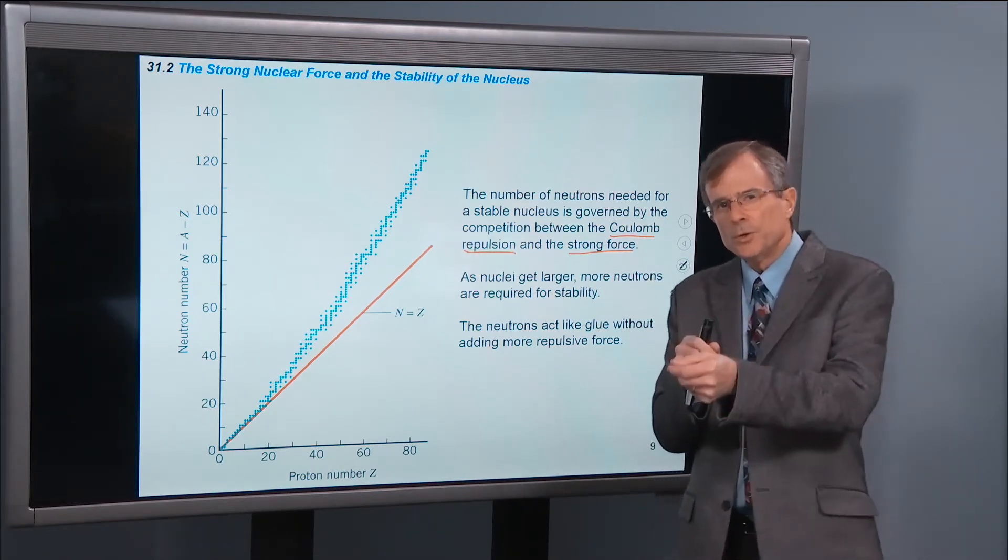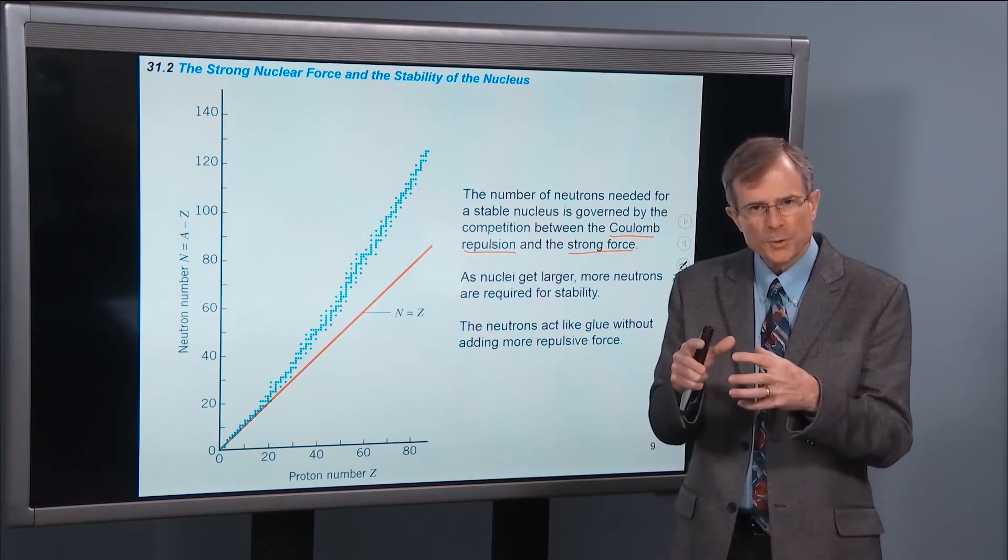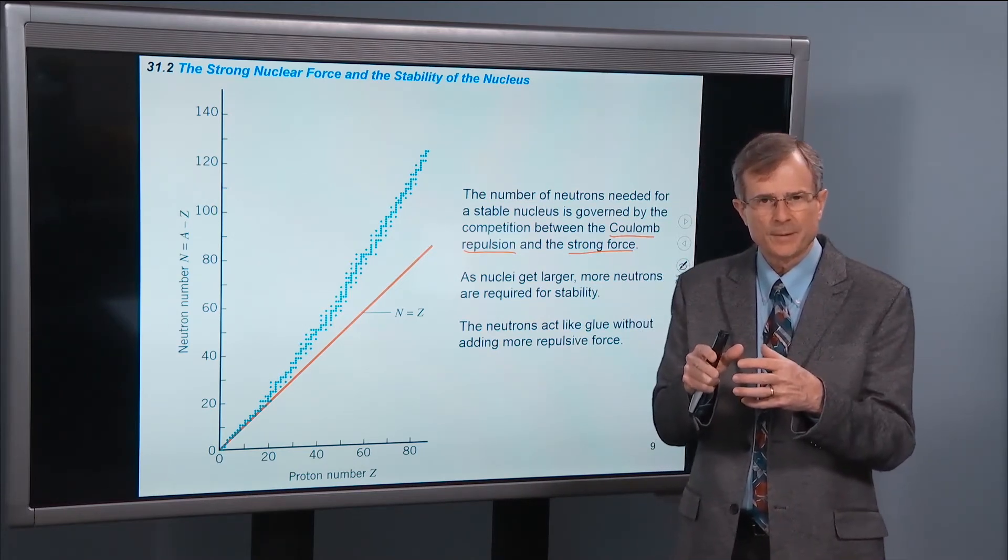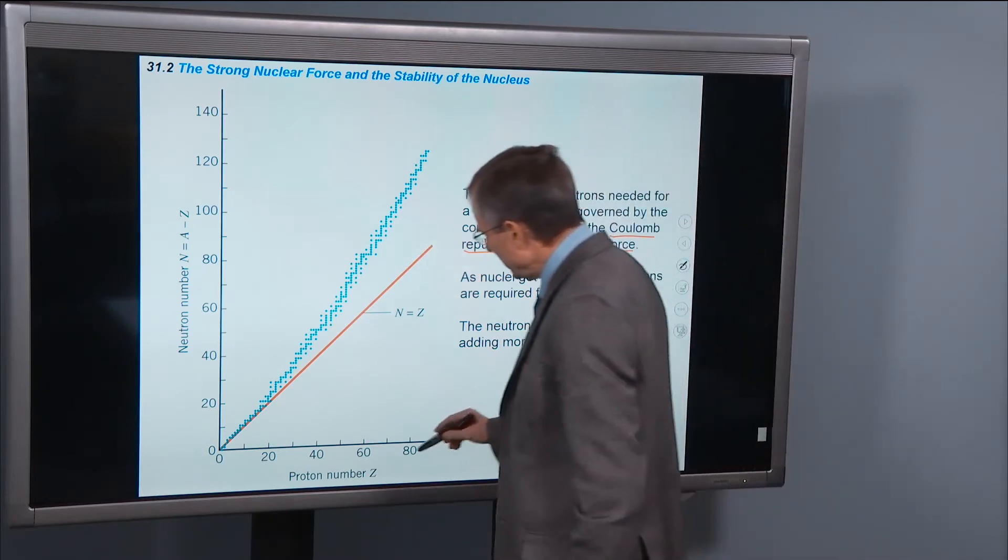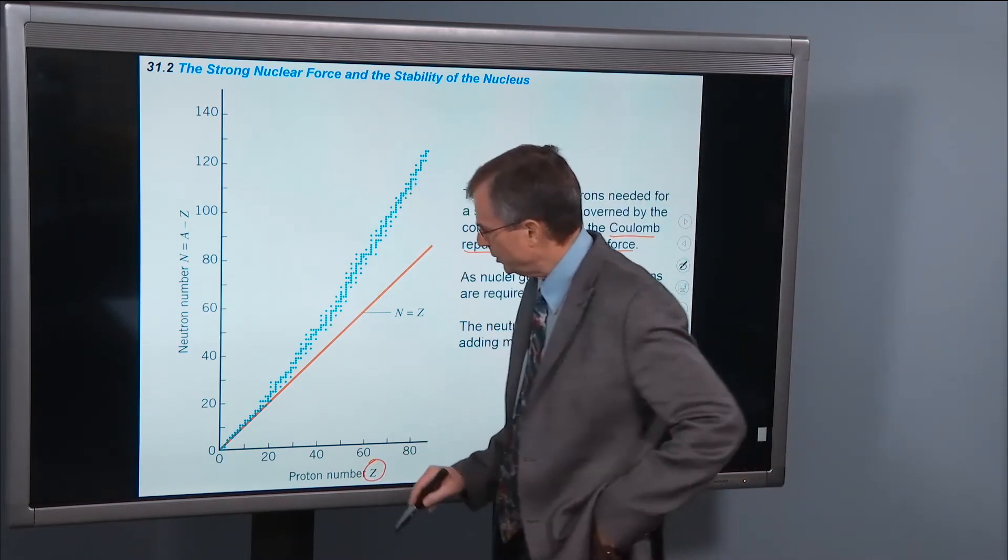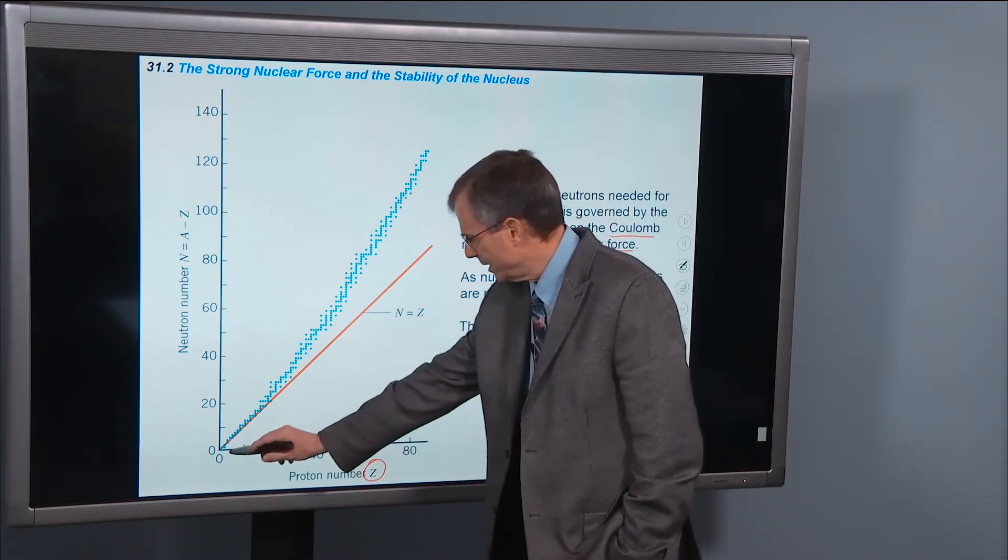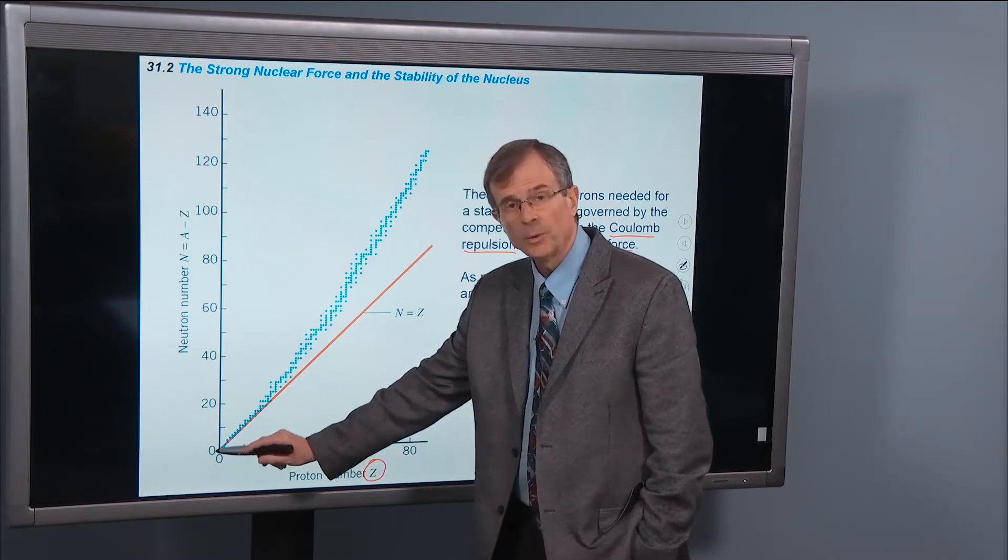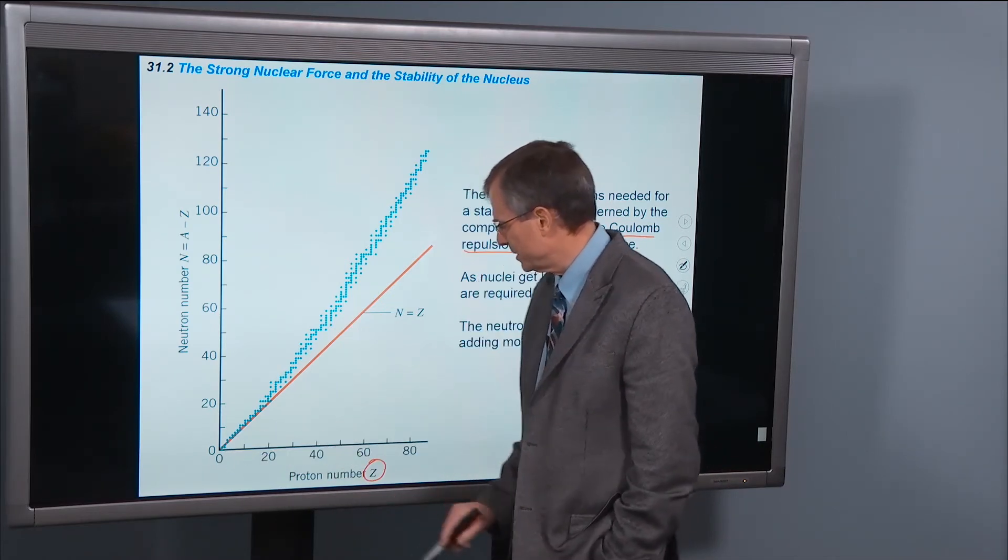So the more neutrons you put in there, the more strong force you have holding that nucleus together. So as you increase the number of protons in a nucleus, that's this number here. Starting with one, one proton for hydrogen would be down here, then helium, etc.